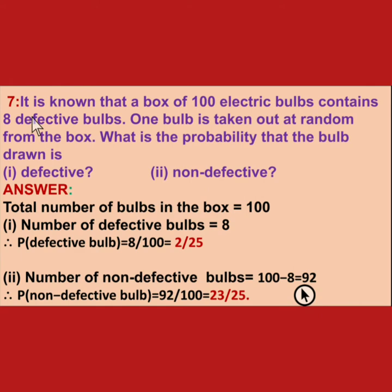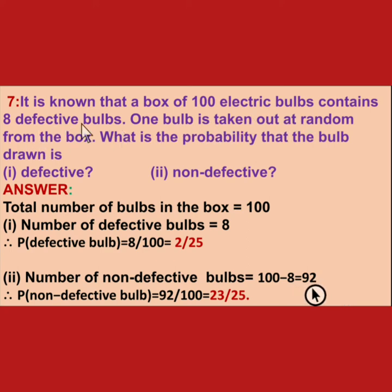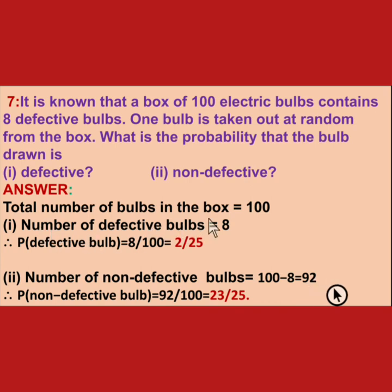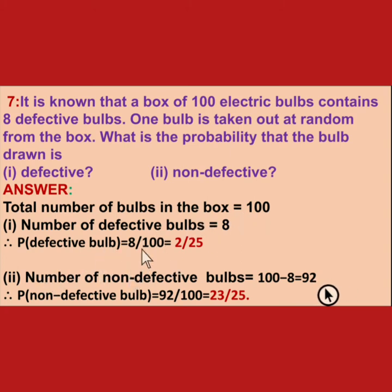Next is seventh. It is known that a box of 100 electric bulbs contains 8 defective bulbs. One bulb is drawn at random from the box. Total number of bulbs is 100 and number of defective bulbs is 8. Probability for defective bulbs is 8 upon 100, which simplifies to 2 upon 25.